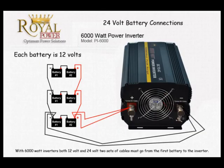Now let's take a look at this diagram here, which shows six 12 volt batteries — three sets of 12s connected in series to make three 24 volt batteries — and then connected in parallel to retain the 24 volt setup, to be used with a 6000 watt DC to AC 24 volt power inverter.